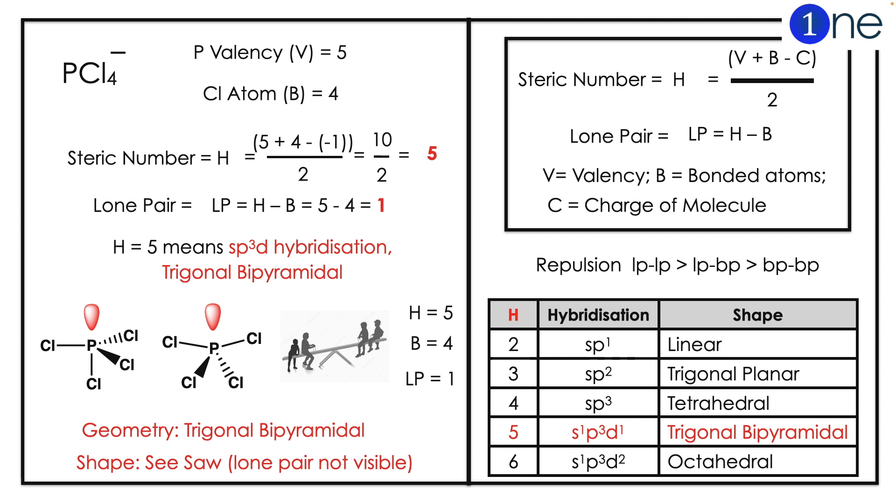Since the size of the electron is very less when compared to atom, the lone pair is not visible. So the structure of PCl4- is seesaw structure.